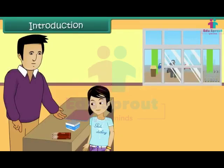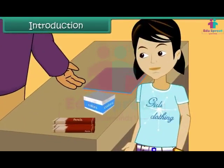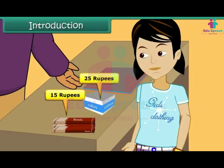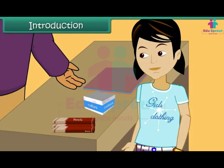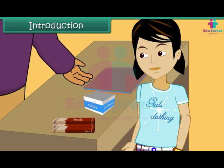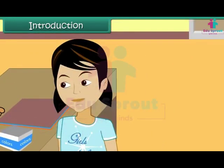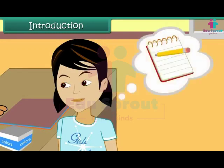Rita has bought pencils for 15 rupees, colors for 25 rupees, and pastel sheets for 12 rupees. The shopkeeper asks her to pay 52 rupees. Rita wants to verify, but there is a problem — she cannot do it without writing the numbers down on paper. She cannot perform mental calculations. This shows how important mental arithmetic is.